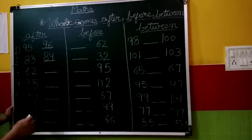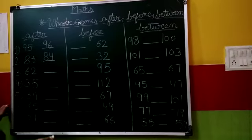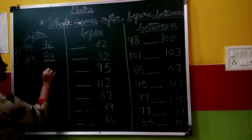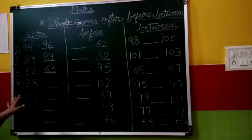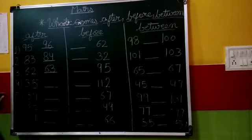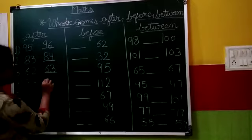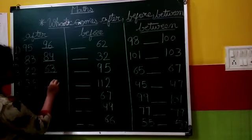62. What number comes after 62? 63. Next is 35. What comes after 35? 36.